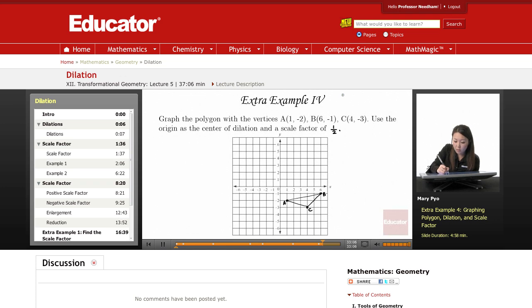So again, scale factor K is image over pre-image. If this is a little confusing, you can always just use, instead of image, you can write prime or new image or something like that, so that way you know what image and what coordinates go with which one, image or pre-image. This is our pre-image. Our scale factor is 1 over 2.